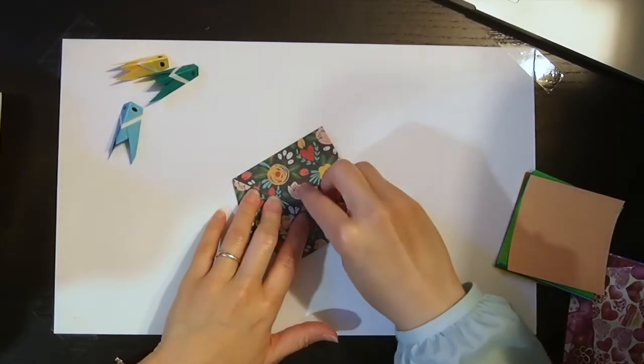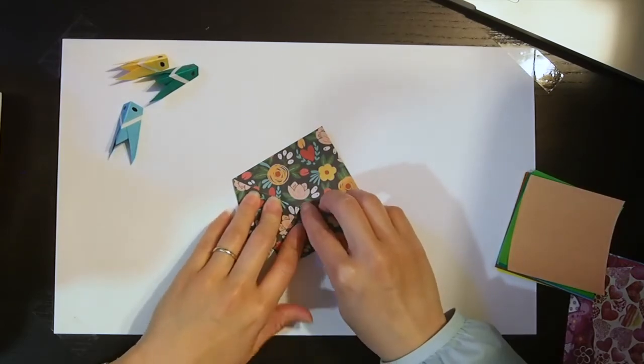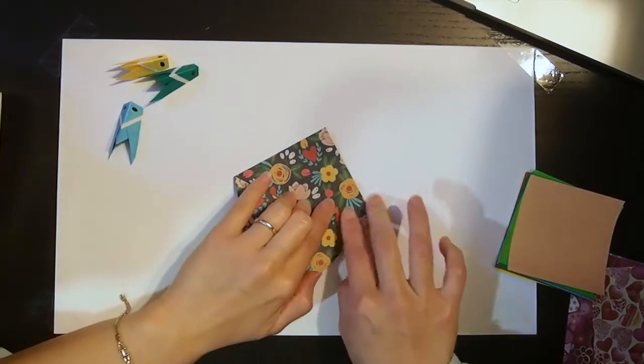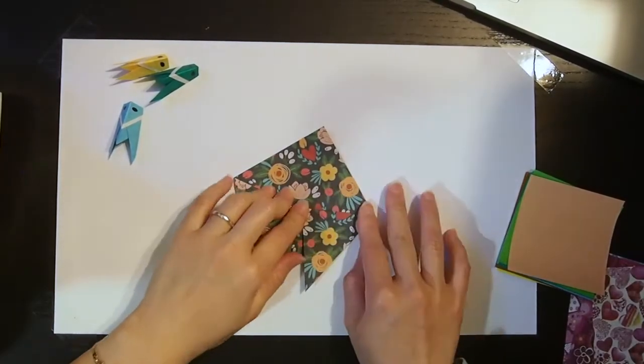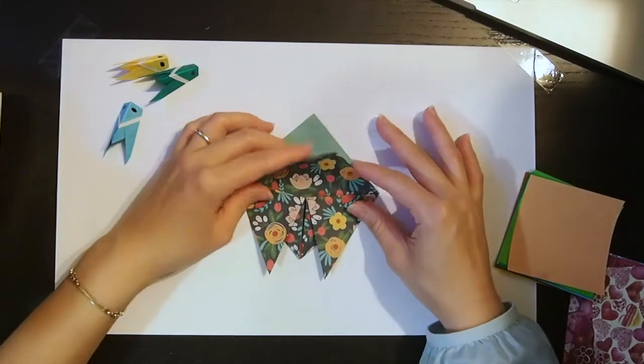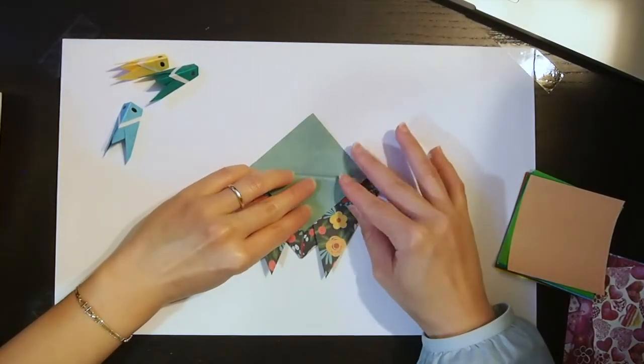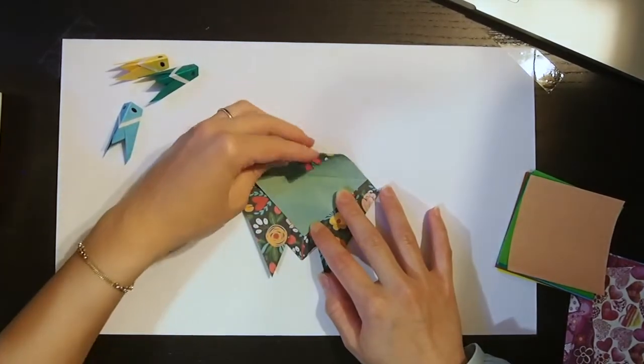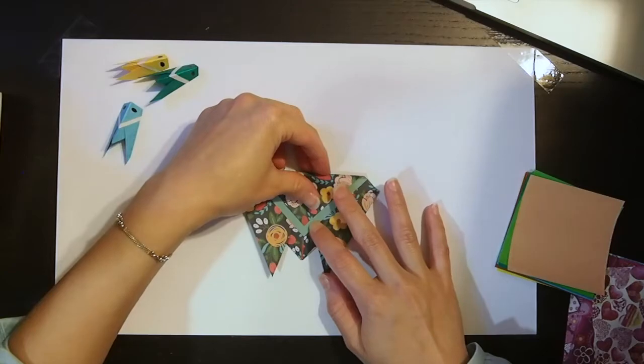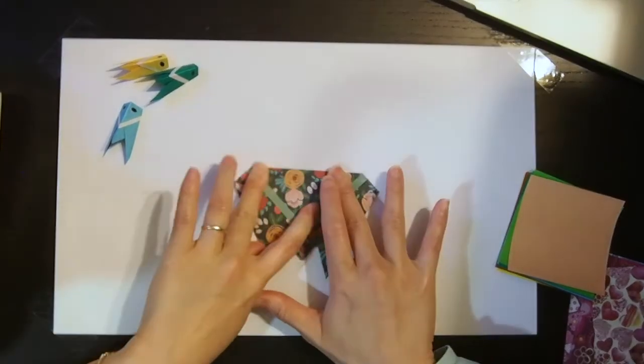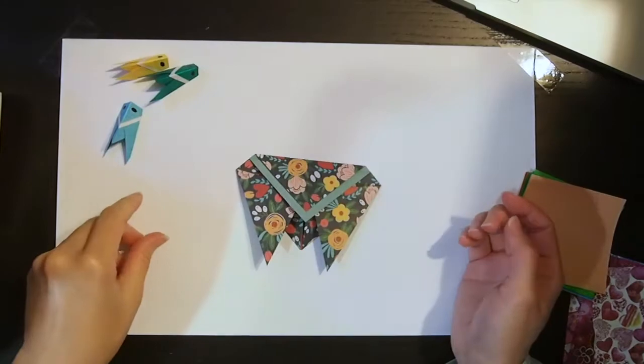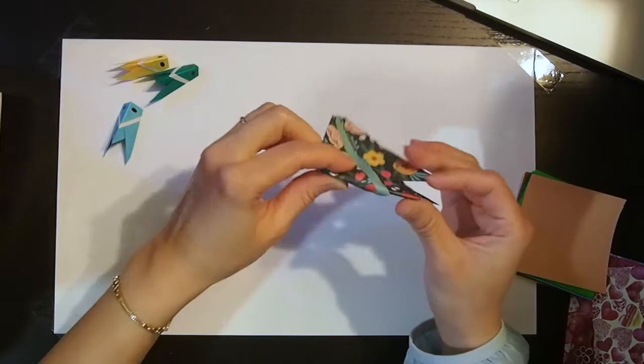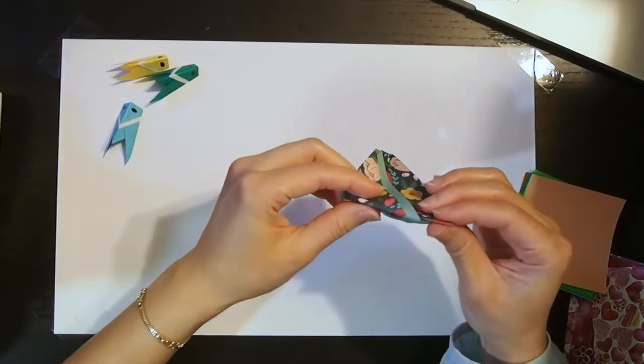Same on the other side, we take the wing down. And we take the top layer down, leaving a little gap. Same, take it down, leaving a little line. Okay, then we fold it.